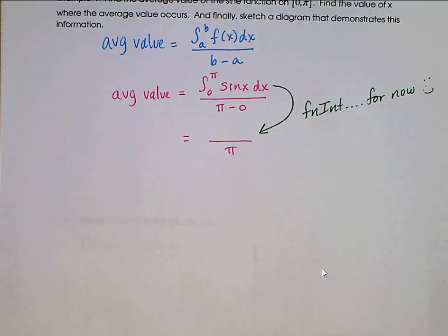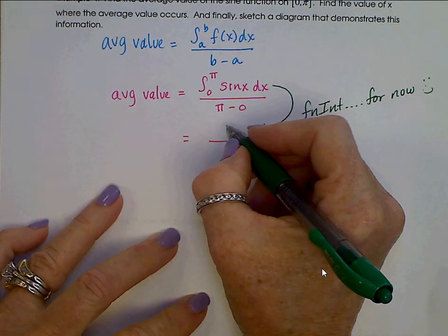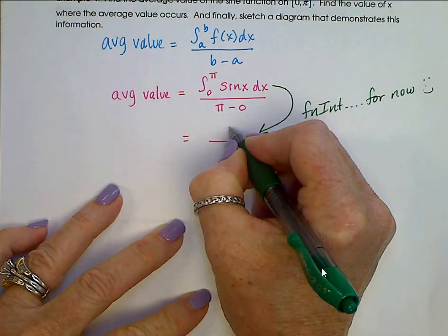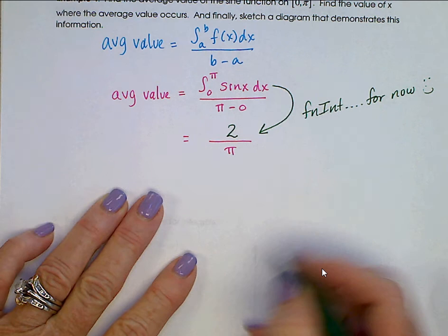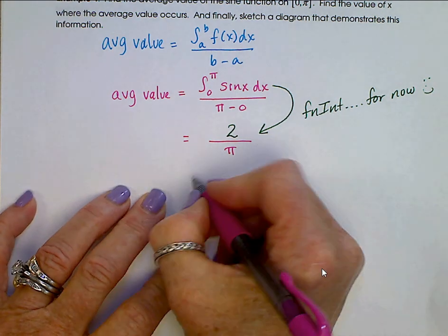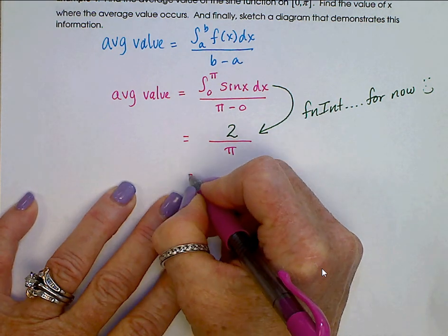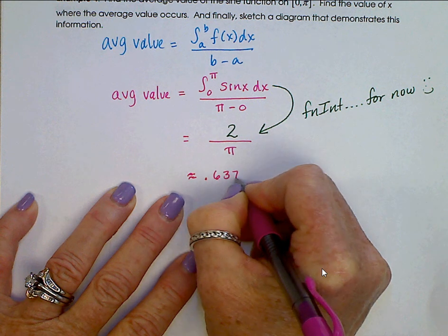A little while from now, you'll be able to do that by hand, but right now, you just need to go to your calculator, and if you do that, I will trust that you know how to do that on your calculator. If you don't, please see your teacher. That's 2, and then a decimal approximation for this is approximately 0.637.